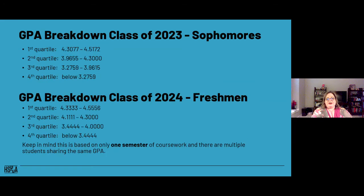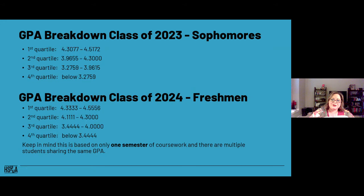Here's a quick breakdown of current GPA quartiles: for current sophomores, the first quartile is 4.3077 to 4.5172. Below that is the breakdown for the freshman class — but remember that's only one semester listed so far. Many students will have the same GPA right now; it's when you accumulate more courses that the GPA starts to spread out.